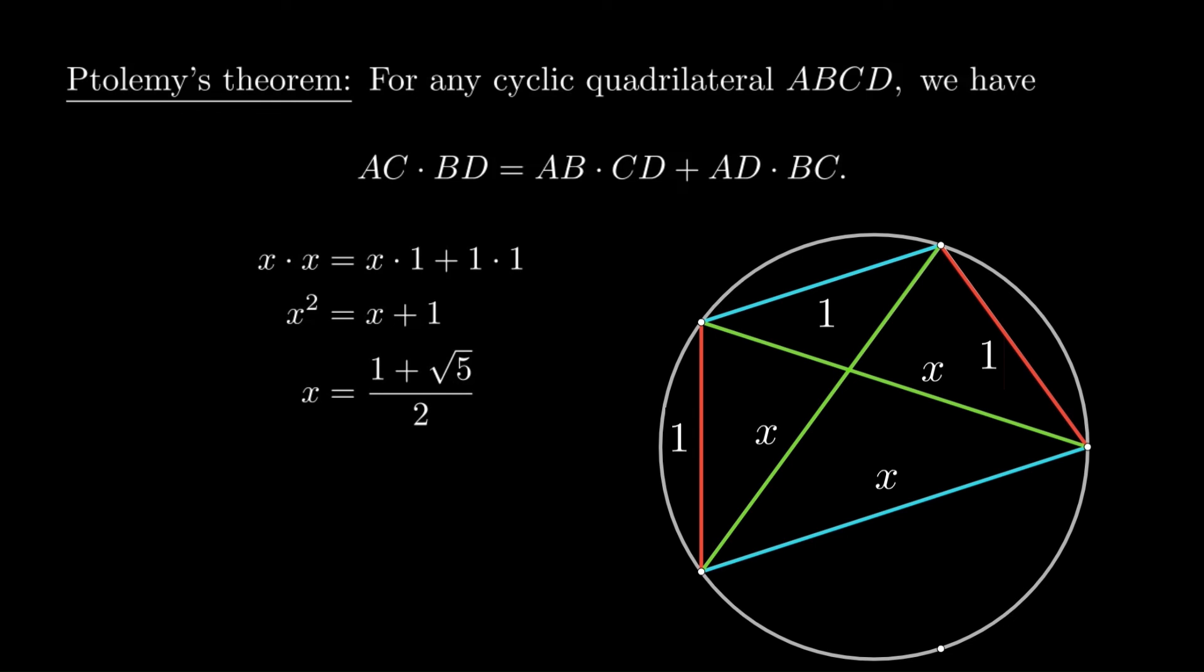A similar trick will give an interesting identity for a heptagon, a regular seven-gon. Although writing down the lengths exactly isn't really doable in a nice way, we can still get an interesting algebraic identity out of it.